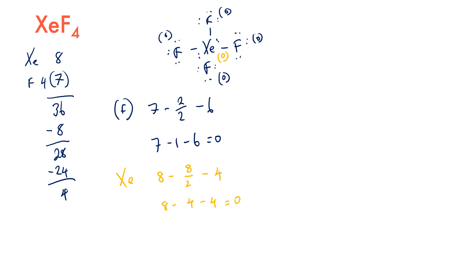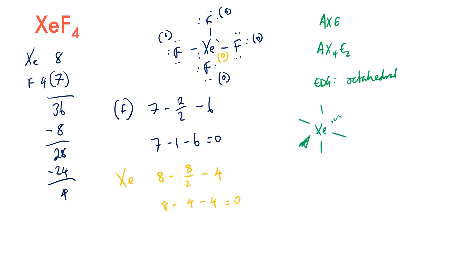Using AXE notation for XeF₄: A is xenon, X₄ are the 4 fluorines, and E₂ represents the 2 lone pairs, giving an electron domain geometry of octahedral. The fluorines are placed on the equatorial plane with lone pairs above and below. The molecular geometry, not counting lone pairs, is square planar, because this arrangement puts the lone pairs as far apart as possible.